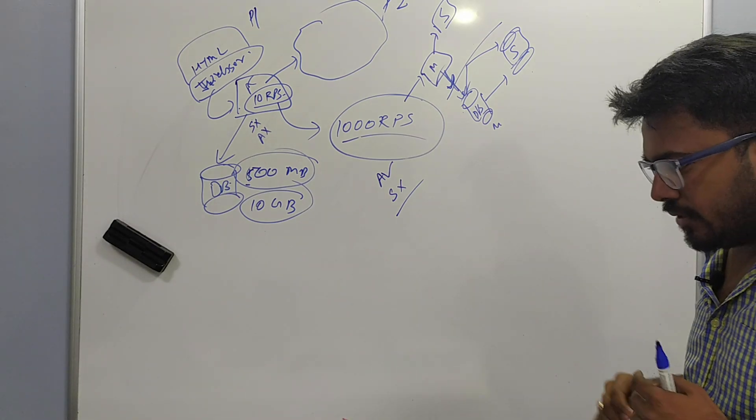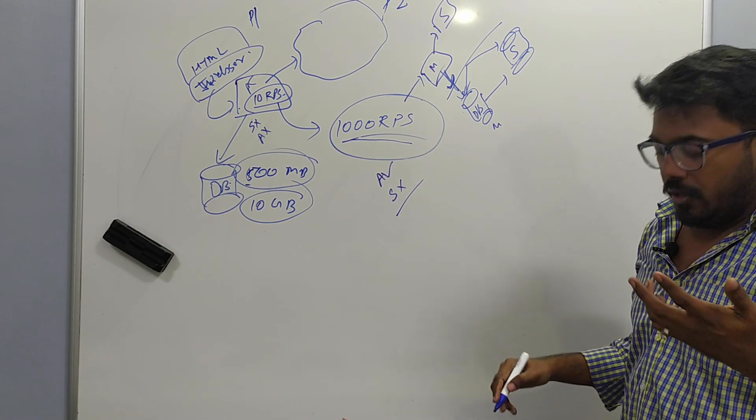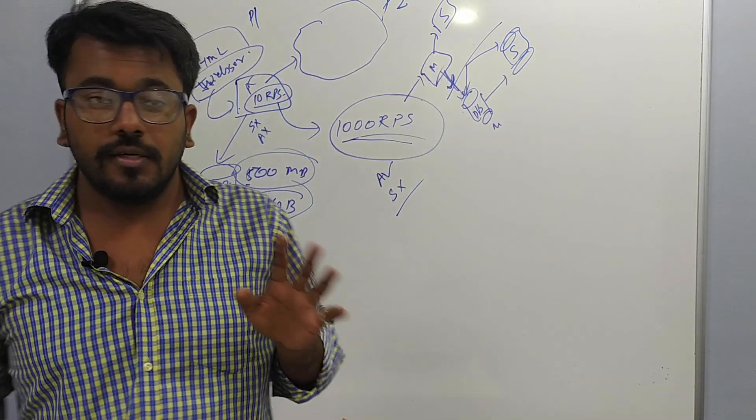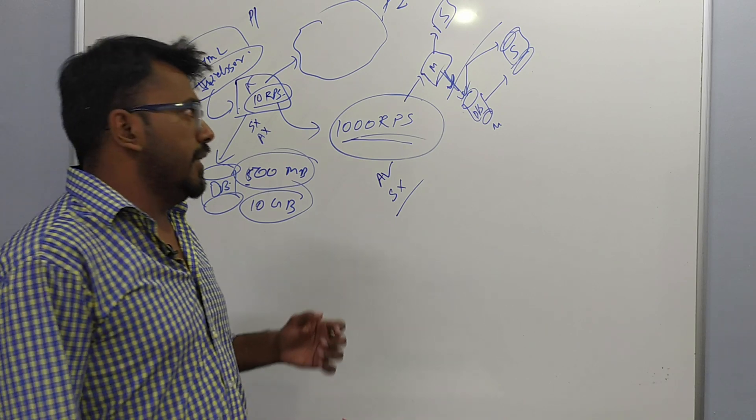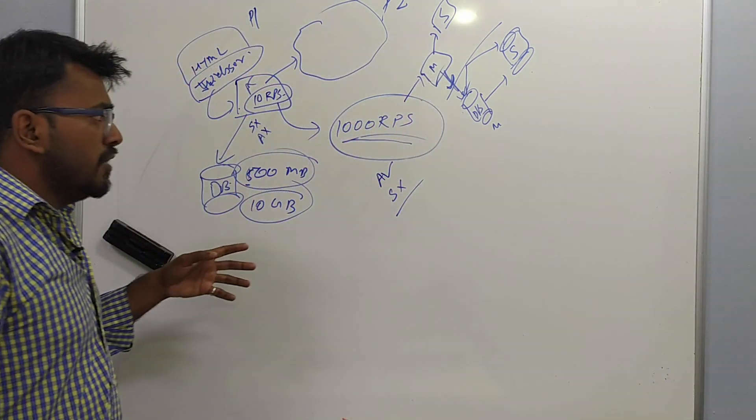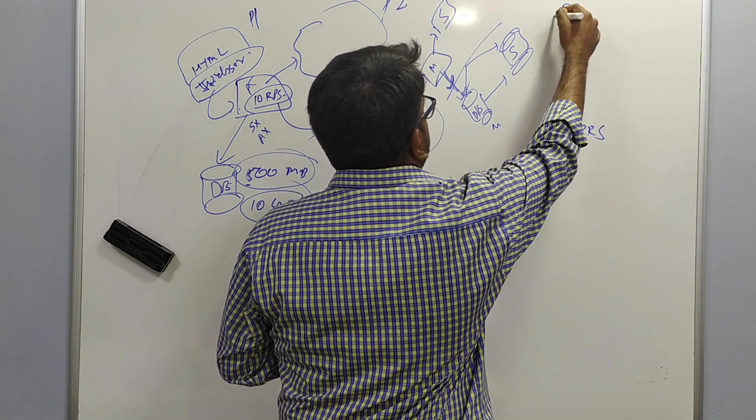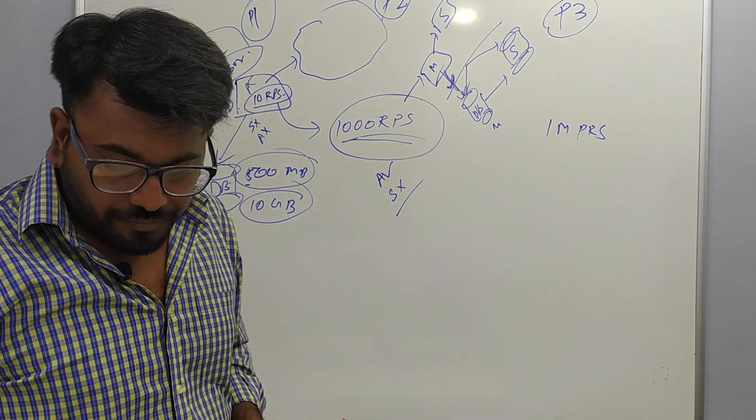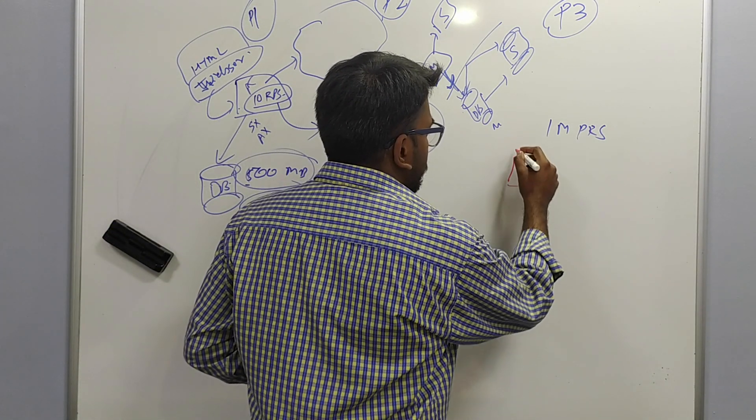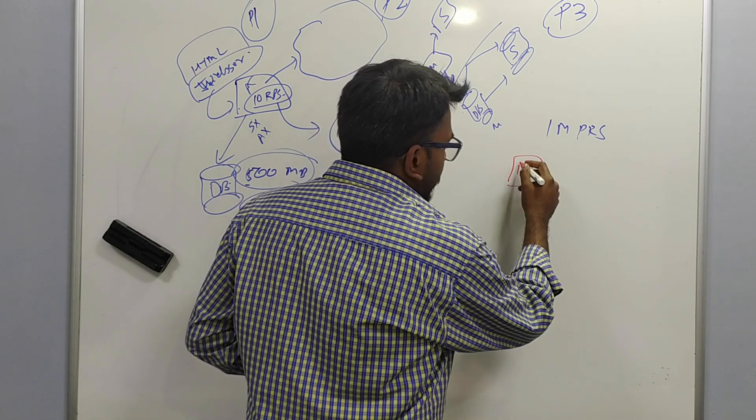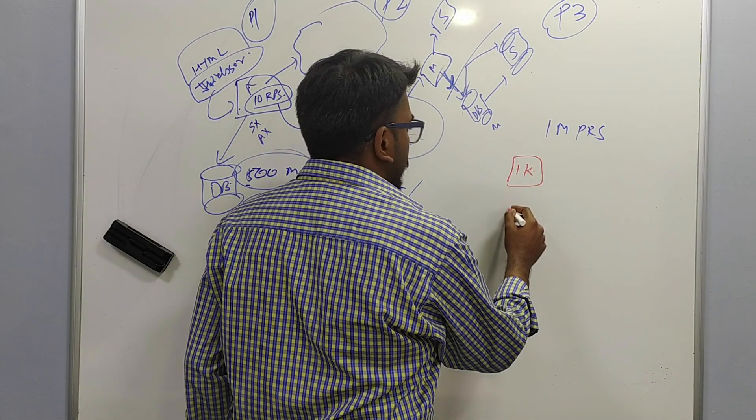Now again the system grew. Today when you are building a system, it's not 1000 RPS anymore. It's actually very high amount of data or very high amount of transactions. There are some companies which are actually clocking 1 million RPS. You can assume the scale at which they are operating. This is not possible using a single box. So now you have to use multiple boxes. When you have 1 million RPS, this is phase 3. At this scale, you need scalability.